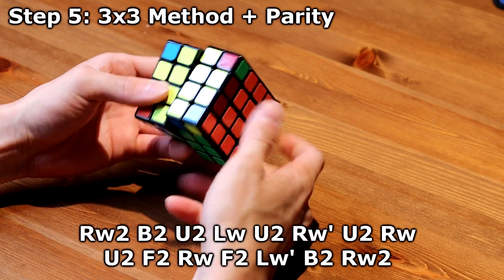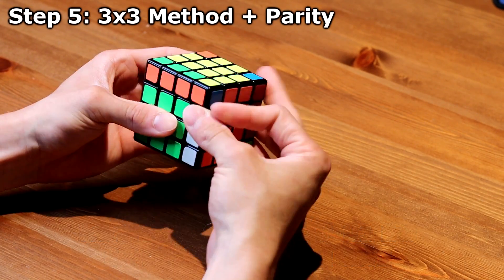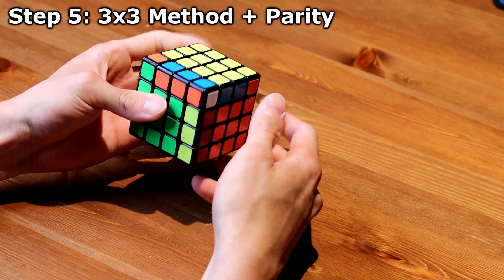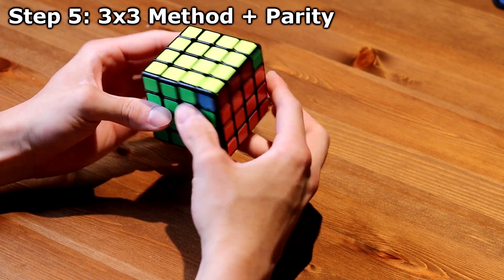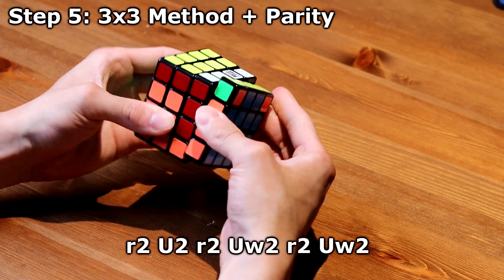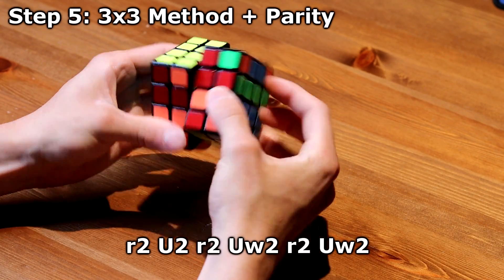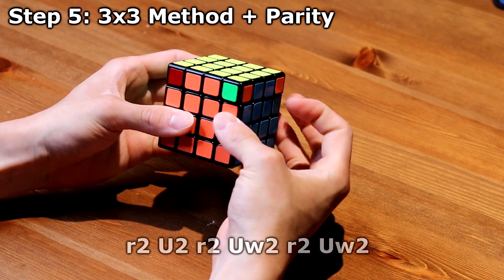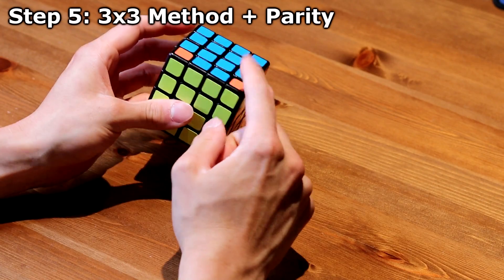So after that, I can do my OLL. And then I notice I have another PLL parity. So I do that algorithm on the screen right now. And then I can finish off with this edge PLL.